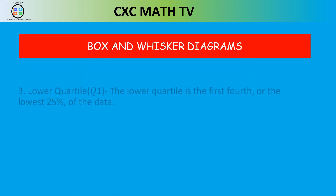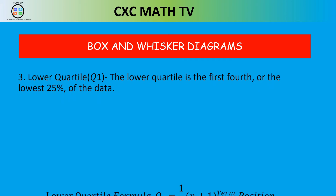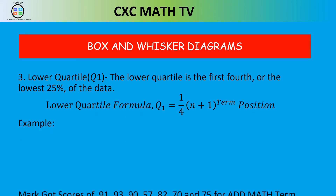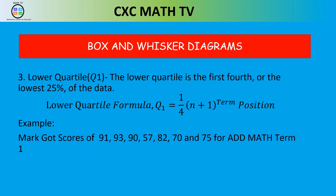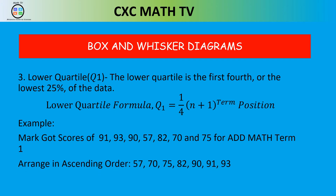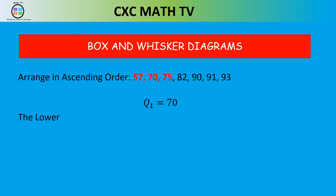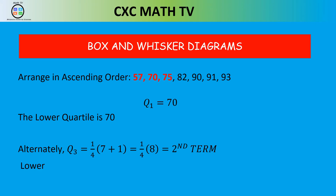The lower quartile, Q1, is the median of the lower half of the data set. Using the formula: position = ¼ × (n + 1). For Mark's data that's ¼ × 8 = 2, so Q1 is the 2nd term. The lower half is 57, 70, 75 — and the median of the lower half is also 70. The second term in ascending order is 70, confirming Q1 = 70.